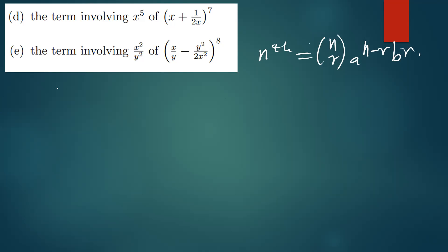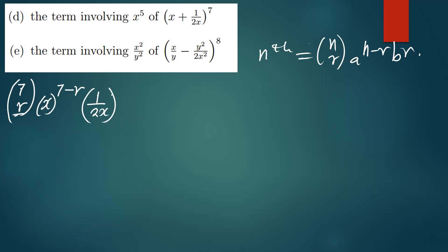We plug in the value of n, which is 7. The value of r we don't know — r is what we need to find, specifically the r at the term that has x to the power 5. So a is given to be x raised to the power 7 minus r, and b is given to be 1 over 2x raised to the power r.